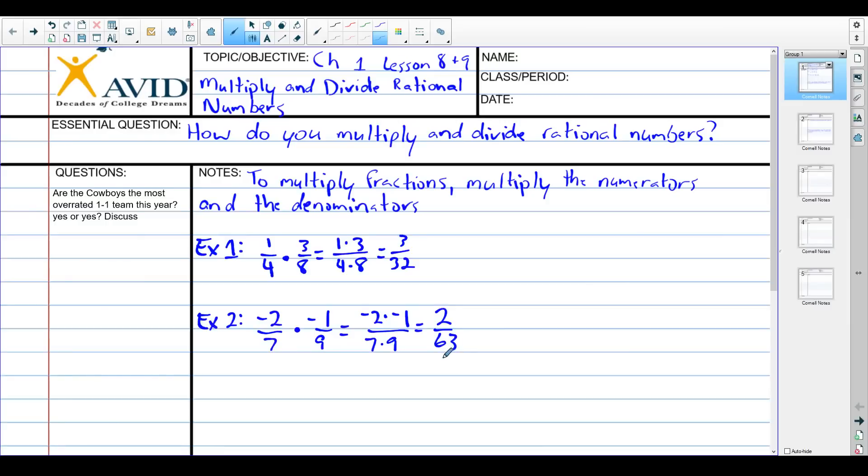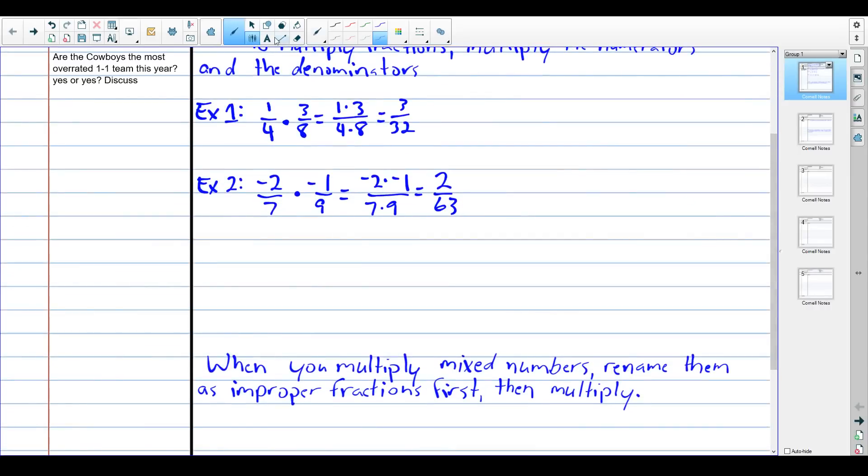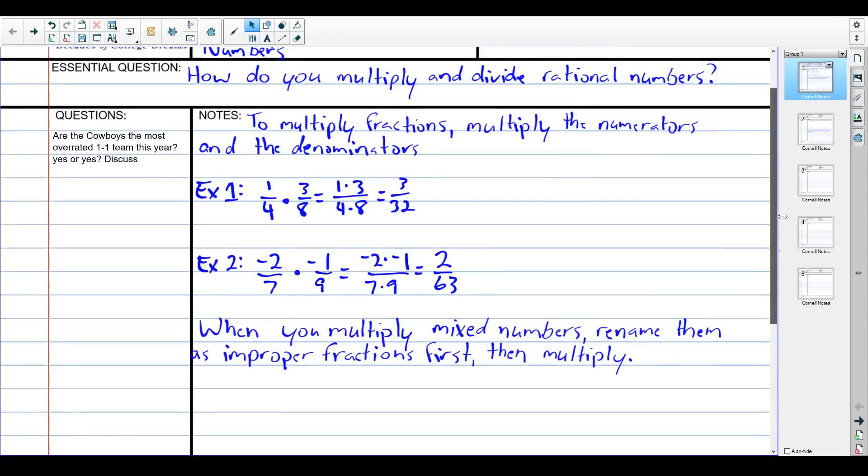So if it's just fractions, you multiply straight across and say hooray, easy questions, easy grades. Then it gets more difficult. When you multiply mixed numbers, we have to rename them as improper fractions first and then multiply. There is no shortcut to multiplying mixed numbers, it's just kind of a pain.